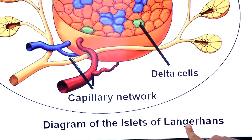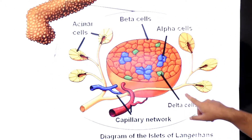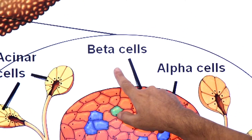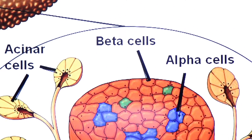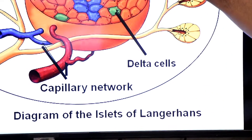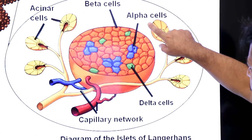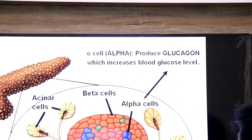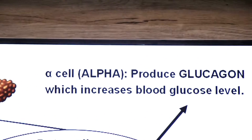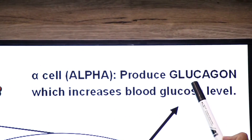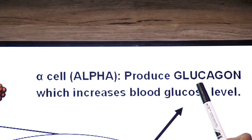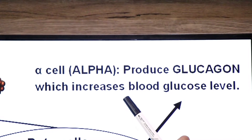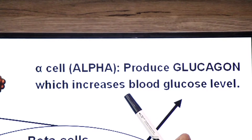Islets of Langerhans is the endocrine part, made up of alpha cells, beta cells, and delta cells. Alpha cells produce a hormone which increases the level of blood glucose — this hormone is glucagon.